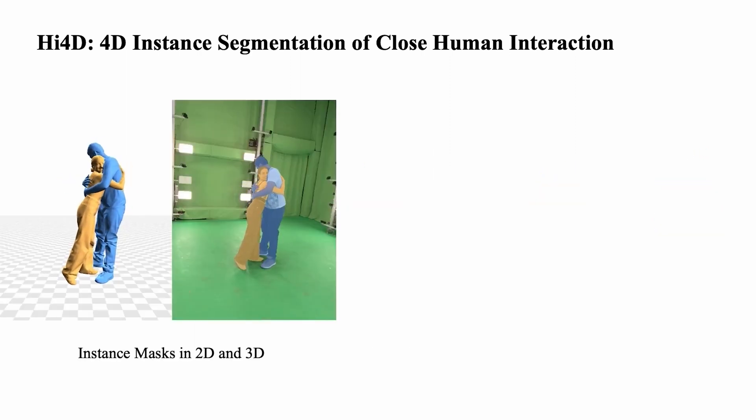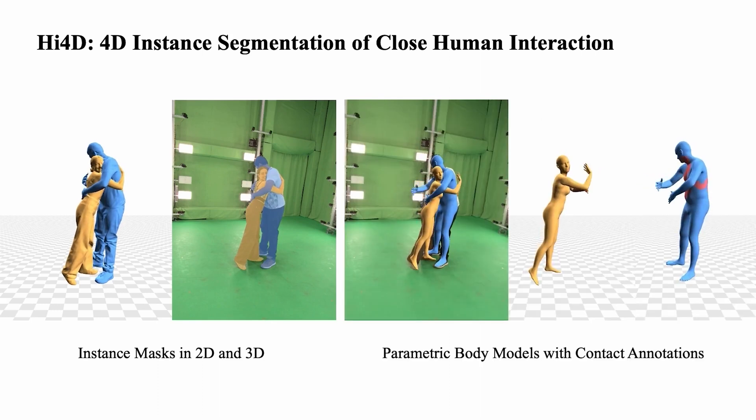This, in turn, allows us to further provide ground truth 3D and 2D instance segmentation masks, ground truth parametric body model registrations, and corresponding vertex-level contact labels.